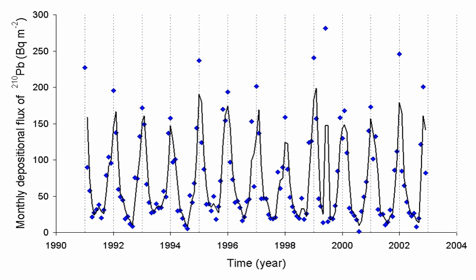Radon is a colorless, odorless, and tasteless gas and therefore is not detectable by human senses alone. At standard temperature and pressure, radon forms a monatomic gas with a density of 9.73 kg per cubic meter, about eight times the density of the Earth's atmosphere at sea level, 1.217 kg per cubic meter.